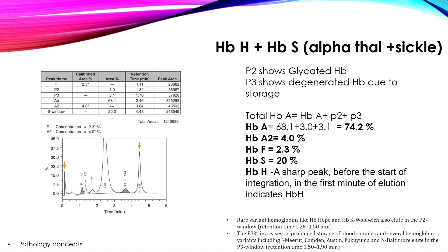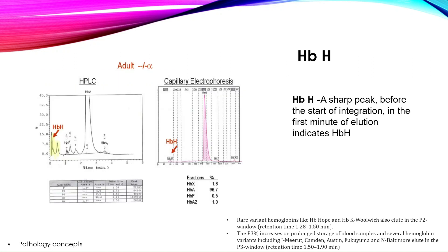HbH plus HbS — alpha thalassemia plus sickle cell — is a compound heterozygous condition. In this graph: HbA is 74.2%, HbA2 is 4%, HbF is 2.3%, sickle cell hemoglobin is 20%, and an additional peak called HbH is identified — a sharp peak before the start of integration in the first minute of elution — indicating hemoglobin H.